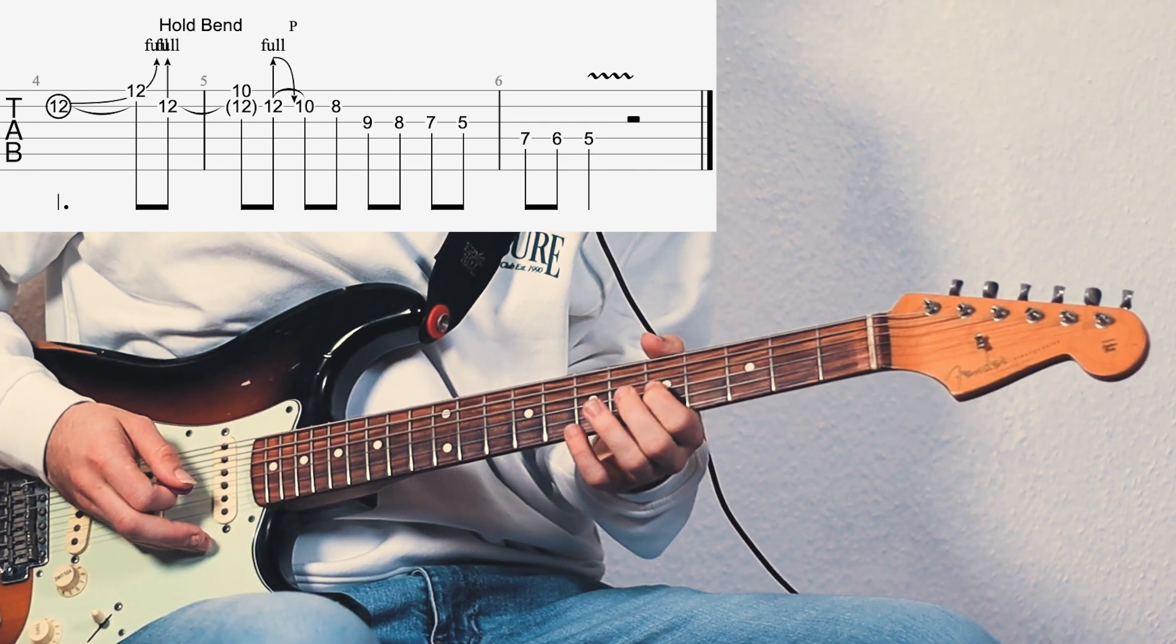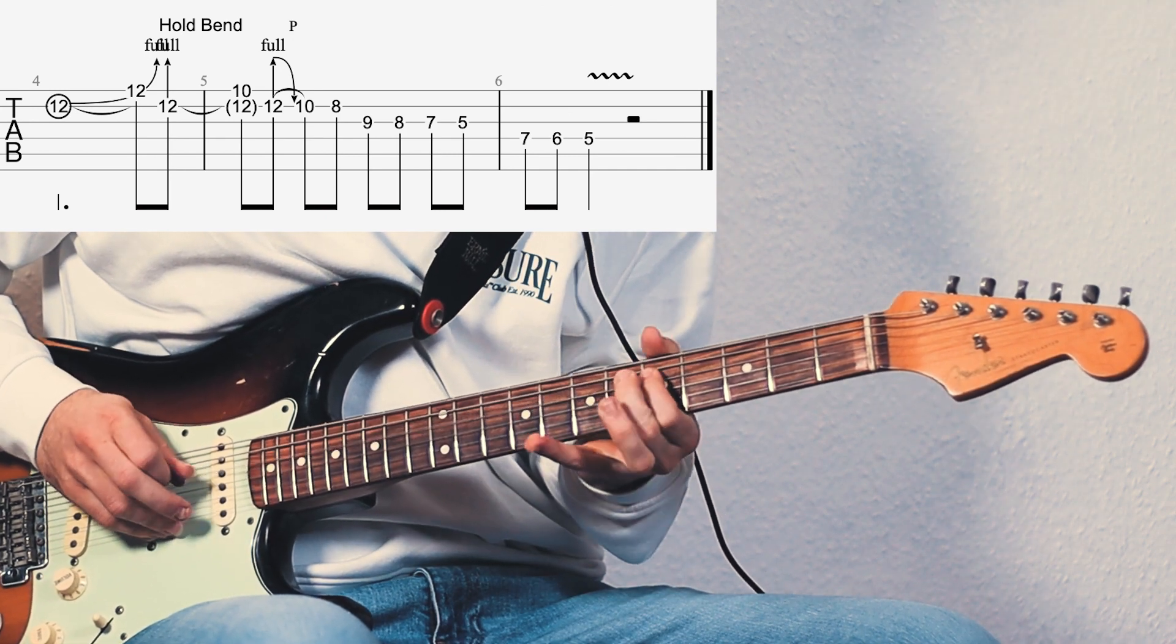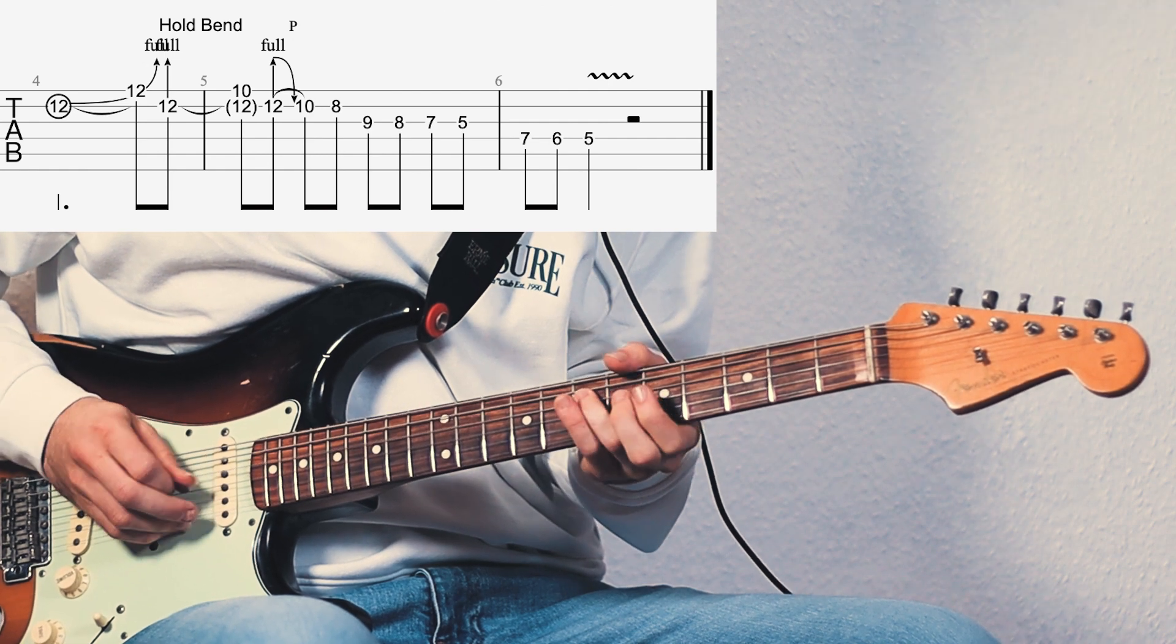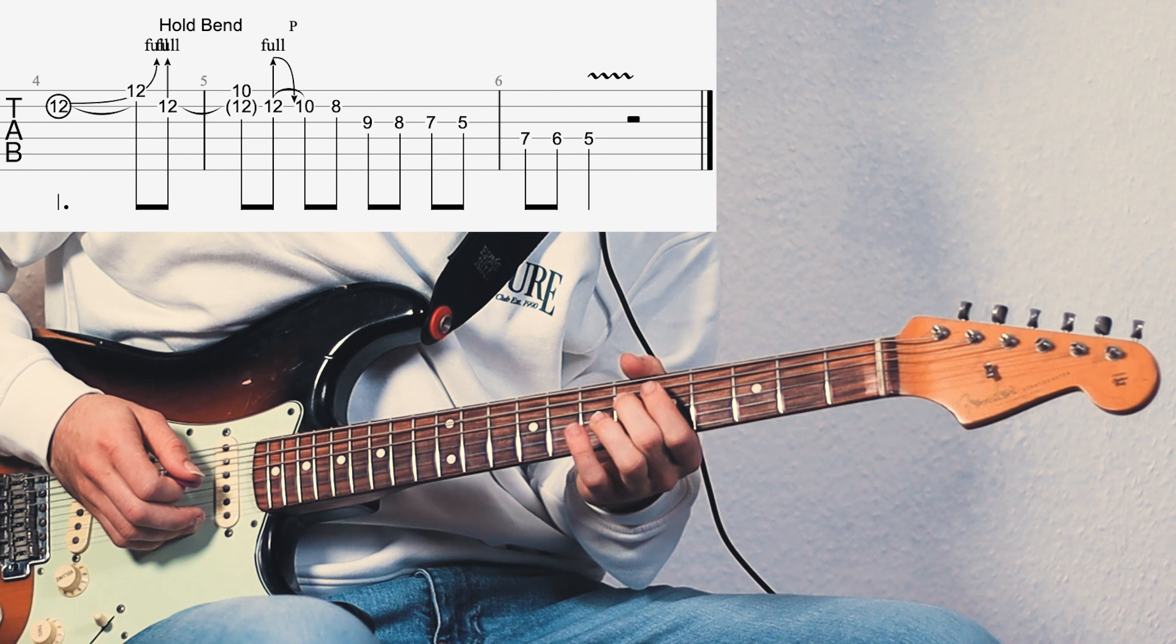Then even further down the scale to the 5th fret of G string, and then another chromatic line down to the minor 7th interval again. It's the 7th fret of D string, the 6th fret, and then the 5th fret.